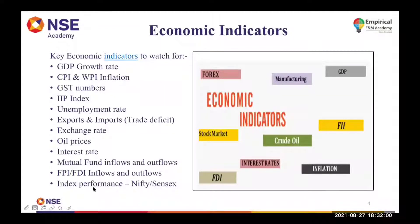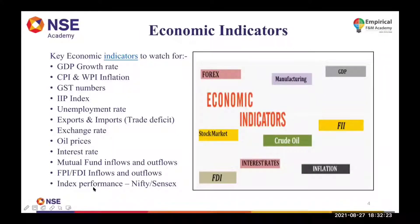Higher the index, higher will be the market — it's good for the markets because production is also increasing. The fifth indicator is the unemployment rate. Higher unemployment is not a good sign. If a country has higher unemployment, people will not have enough money to spend, consumption will be less, production will also be less, and therefore GDP will also be less.